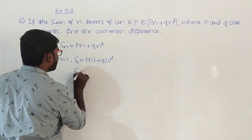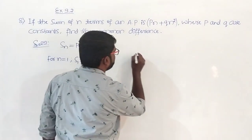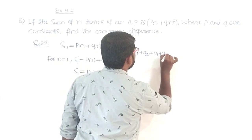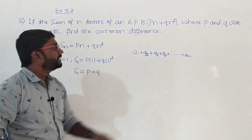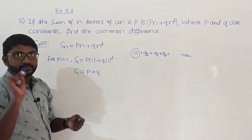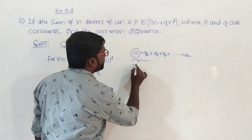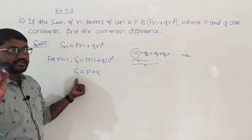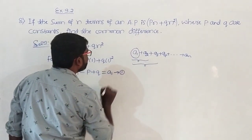So S1 equals p plus q. Now, what is S1? If you consider the series a1 plus a2 plus a3 plus a4 and so on up to an, this is the sum of the first n terms of an AP. Here a1 is nothing but S1. So S1 equals a1. I call this equation number 1.